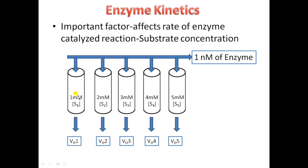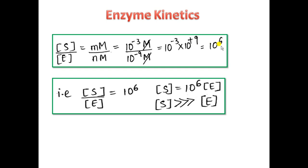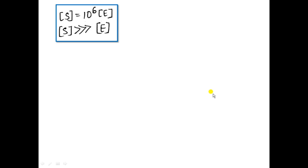To solve this problem and ensure each test tube has approximately constant substrate concentration during monitoring, note the ratio of substrate to enzyme concentration. Substrate was in millimolar (10 raise to minus 3) and enzyme in nanomolar (10 raise to minus 9), giving a substrate-to-enzyme concentration ratio of 10 raise to 6. This means we must take the substrate concentration very much greater than the concentration of the enzyme — this is one condition you must follow to avoid that problem.